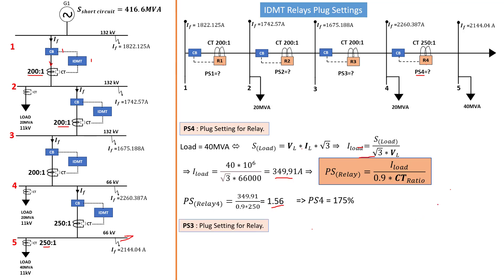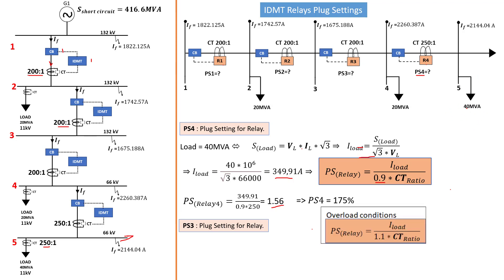Continuing to the plug settings for relay 3. Before we do that, I'd like to mention one small detail about the 0.9 factor. If the loads are motors — and we all know motors have a high starting current before the current stabilizes — in that condition you have to use 1.1, that is 110% of the relay setting current. That 110% is rated slightly higher to take care of the high starting current in the case of motors. Other than that, if you are dealing with normal loads, you stick with 0.9, which is 90% of the setting current.